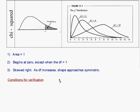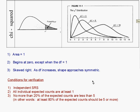Just like in z-tests and t-tests, we're going to have to verify that it's okay to use the chi-squared distribution. Here are the three points of verification: it has to be an independent simple random sample; all expected counts are at least one; and no more than 20 percent of the expected counts are less than five. I like to think of it the other way around — at least 80 percent of the expected counts should be five or more — but either way it's the same.